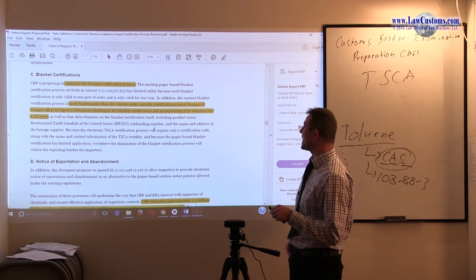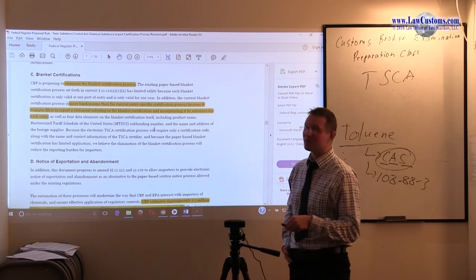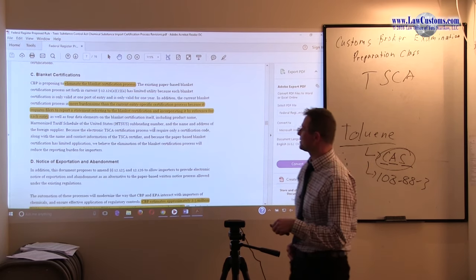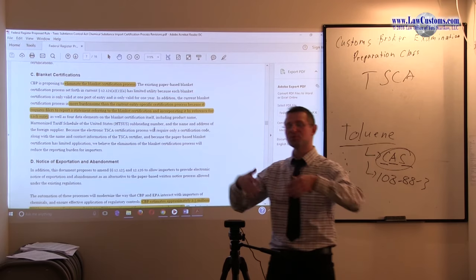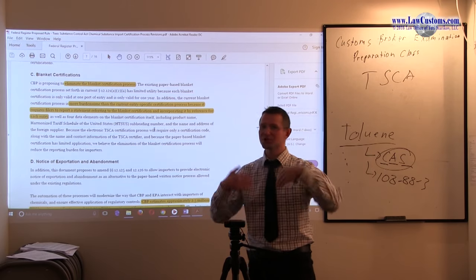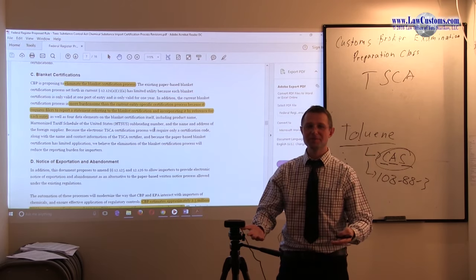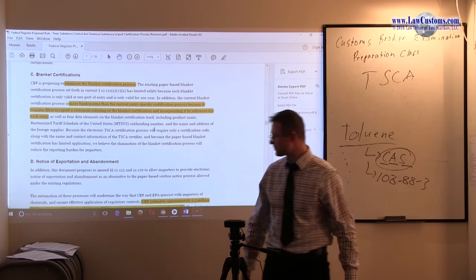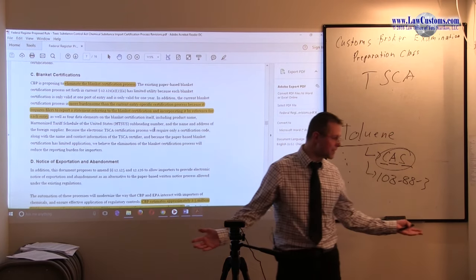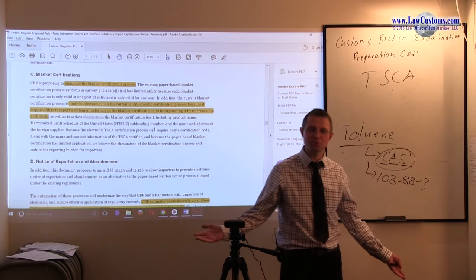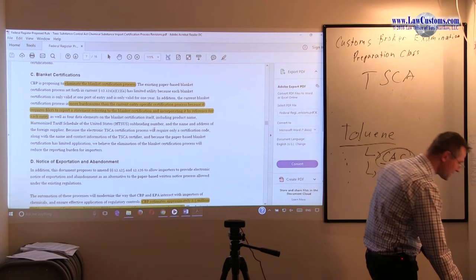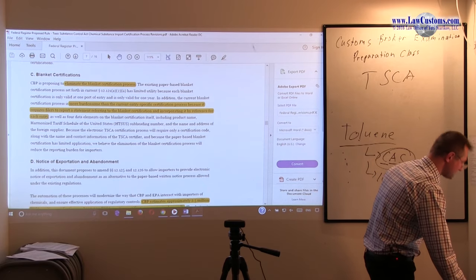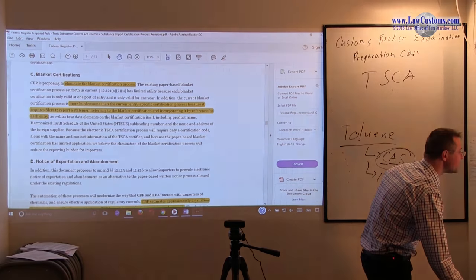They say it is more burdensome than the current entry-specific certification process because it requires filers to report a statement referring to blanket certification and incorporating it by reference for each entry. In other words, it's a duplication of work. Since they have to go through this incorporation process, why don't you just declare it every time and make everyone's life easier? Is it going to happen or not? It's too early to tell, but it's cooking in the books right now.